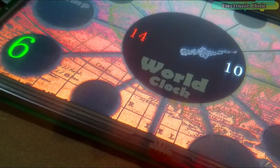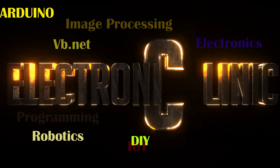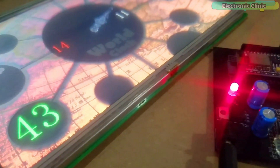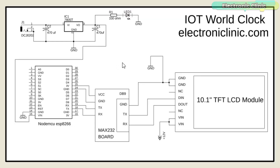I will explain the modified circuit diagram in a minute. Without any further delay, let's get started. The components and tools used in this project can be purchased from Amazon — links are in the description. The circuit diagram is really simple. The 10.1 inch TFT LCD and NodeMCU ESP8266 modules are powered using a 12V adapter or battery. All grounds are connected together. The DN pin of the TFT LCD module, which is the data-in pin, is connected with the TX pin of the DB9, and the D-out pin is connected with the RX pin of the DB9.